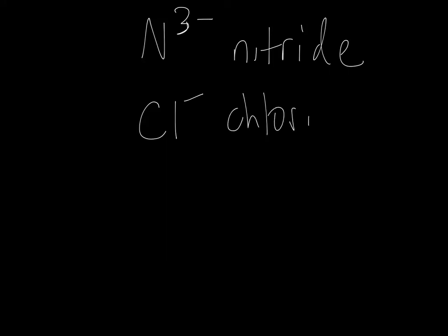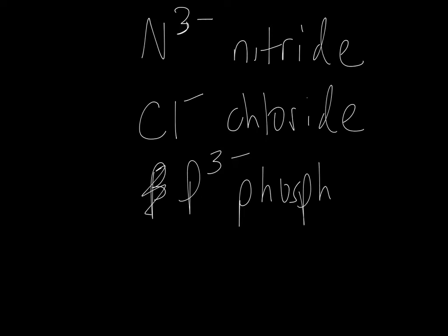As you may recall from 10th grade chemistry, different ions have different names. N3- as in all single atom or single element negatively charged ions end in -ide. So that would be the nitride ion. Cl- is the chloride ion. P3- is the phosphide ion.